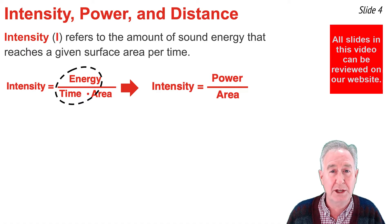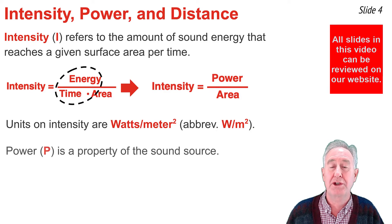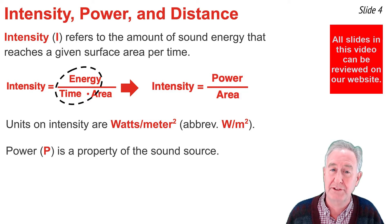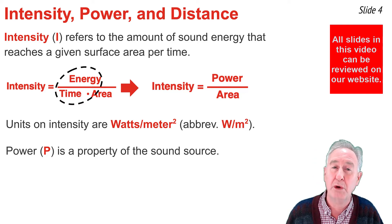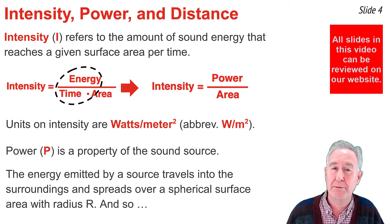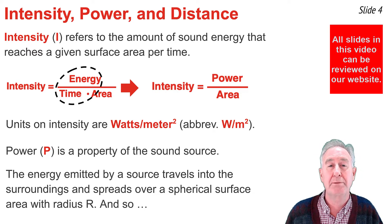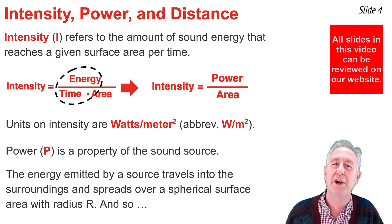The units of intensity are units of power divided by units of area — the standard metric units being watts per meter squared. The power in this equation is a property of the source of sound; for instance, you could have high wattage speakers or low wattage speakers. As the energy emitted by a vibrating source of sound is introduced into the medium, it begins to spread outwards from the source over a spherical surface area of radius r.